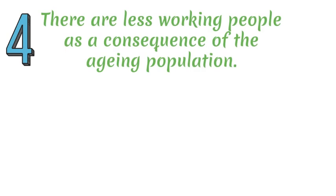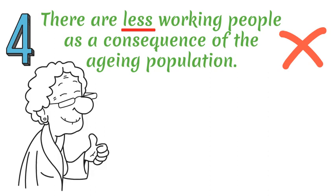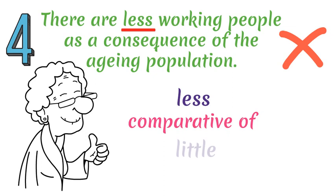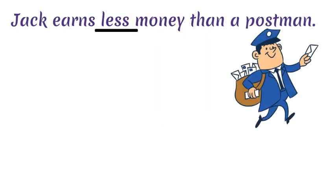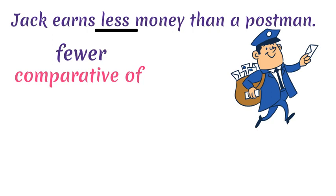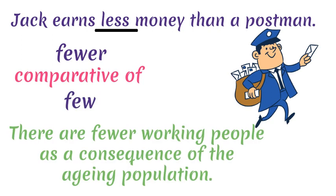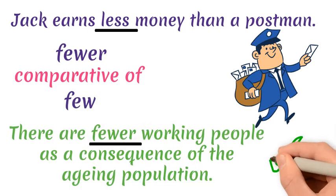Mistake number four. Although 'less' is commonly used before plural nouns in the UK, it is not grammatically correct. 'Less' is the comparative form of 'little' and we use it before uncountable nouns. Before plural nouns, we use 'fewer', which is the comparative form of 'few'. For example: 'There are fewer working people as a consequence of the aging population.'